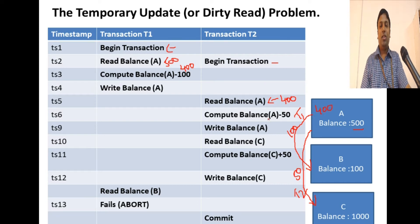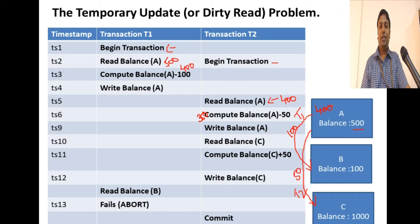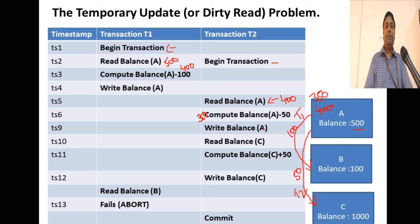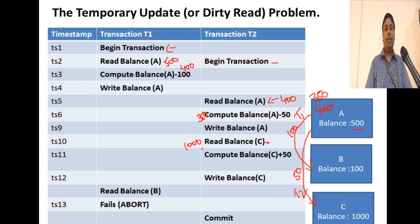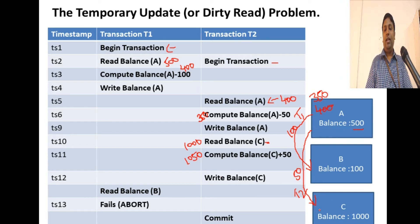T2 computes A minus 50. What is 400 minus 50? That is 350. T2 writes balance of A as 350 to the buffer. Then T2 reads balance of C, which is 1000, computes C plus 50 = 1050, and writes balance of C as 1050.